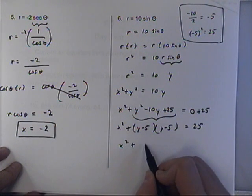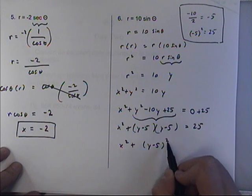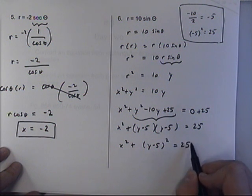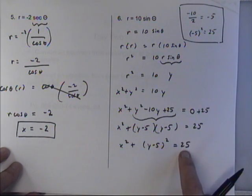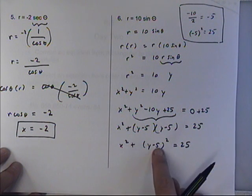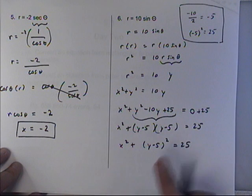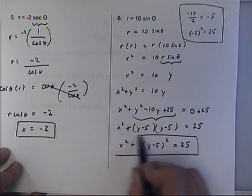So then we can write it as a standard form of a circle. So the radius of this circle is 5, because this is radius squared. The center of the circle is at 0, 5. And you can see those things when you put it in standard form.